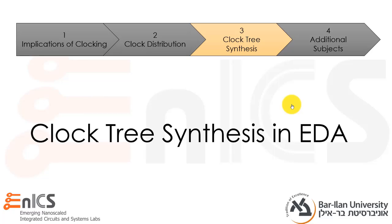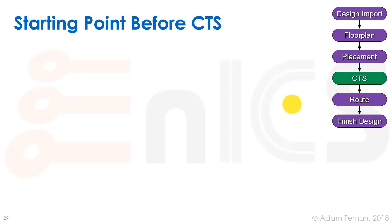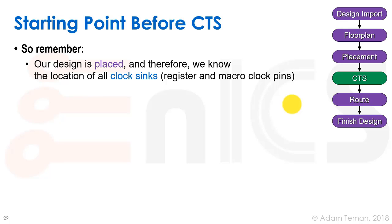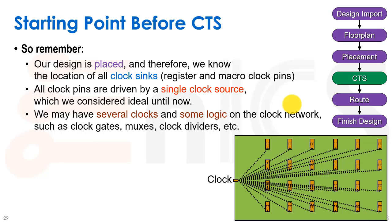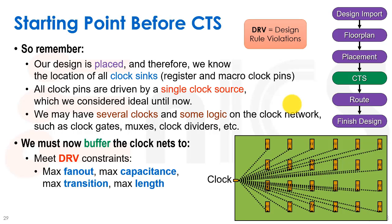We'll go over how clock tree synthesis is done in EDA tools. Before CTS, the design is placed so we know the location of all the clock sinks — the register and macro clock pins. All clock pins are driven by a single clock source. There may be multiple clocks and some logic on clock networks such as clock gates, muxes, and clock dividers. We need to buffer the clock nets to meet DRV constraints — DRV stands for design rule violations in Cadence tools — covering max fanout, max capacitance, max transition, and max length.